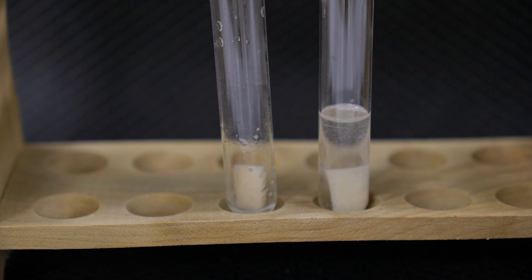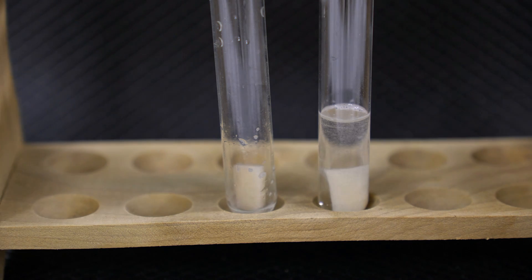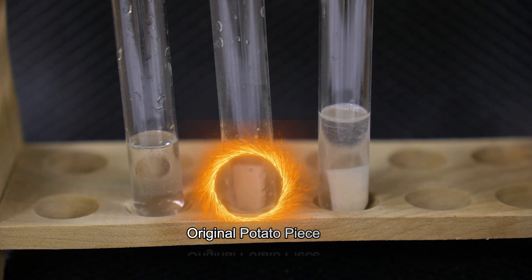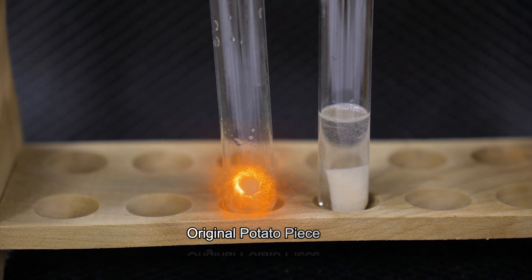Now, in contrast, we're looking at that first piece of potato. What I have now is a fresh 4 mL of hydrogen peroxide. I'm going to add it to our original potato and see what happens for a reaction.